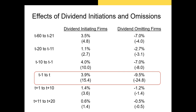There is a lot of price movement around the initiation or omission. On the date a firm announces it will start paying a dividend, there's about a 3.9% abnormal return. If firms announce they're cutting dividends, those firms saw on average a negative 9.5% one-day return around the announcement of the dividend omission. Investors despise dividend omissions — they will sell their shares immediately as soon as dividends are cut or completely eliminated.